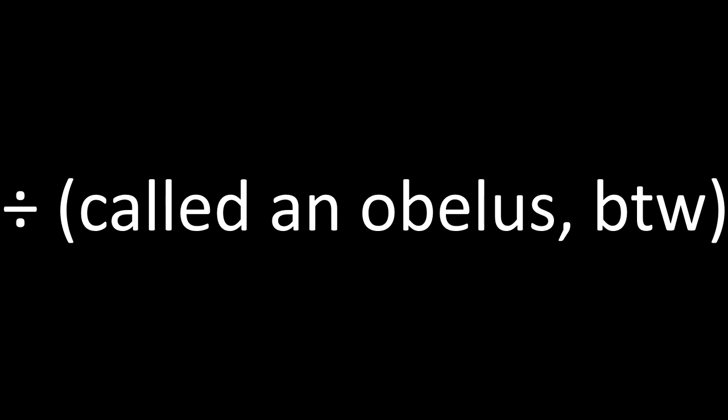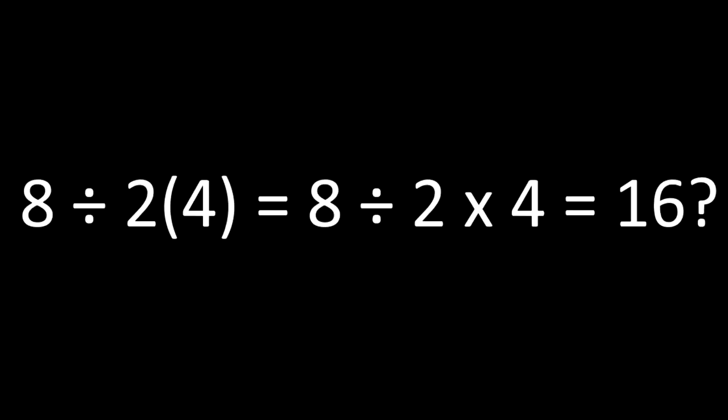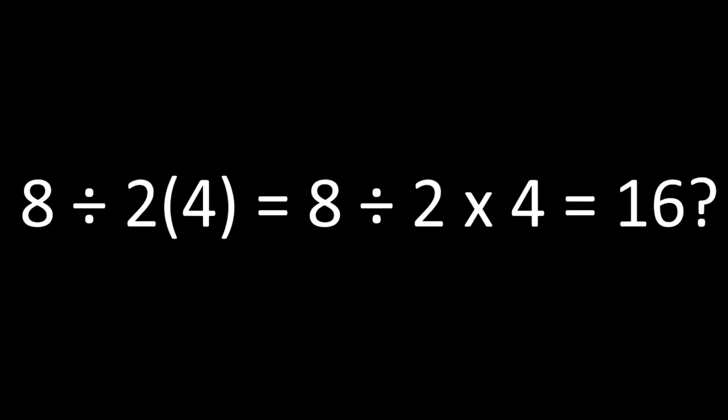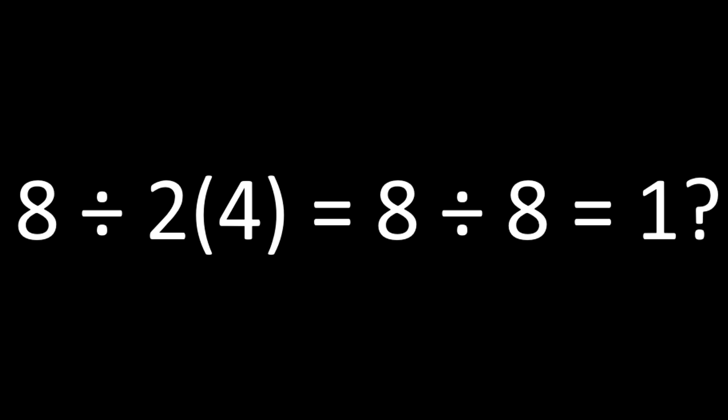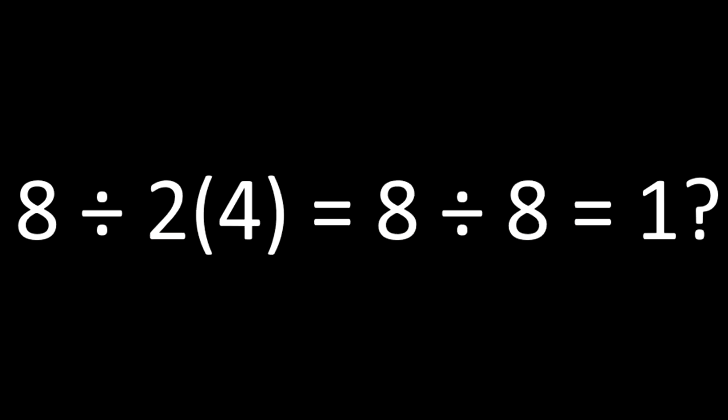This horrible division symbol thus spawned two possible answers. One of them assigns the parentheses as a multiplication symbol, which is mathematically justifiable, and the solution comes out as 16. The other solution assigns the parentheses as a value attached to the two as if it were a variable, as if it was 2x instead of 2 parentheses 4, which is also mathematically justifiable, and this solution outputs 1.